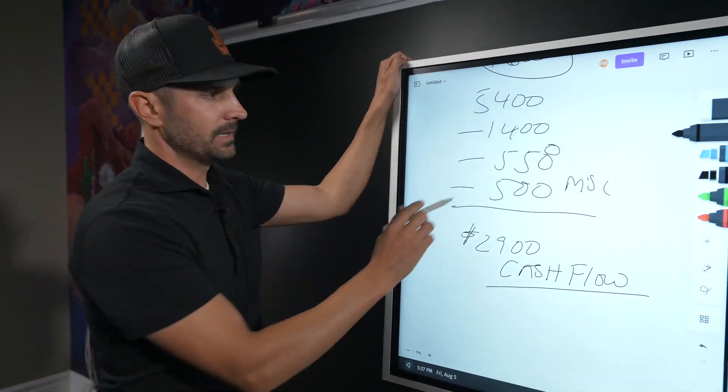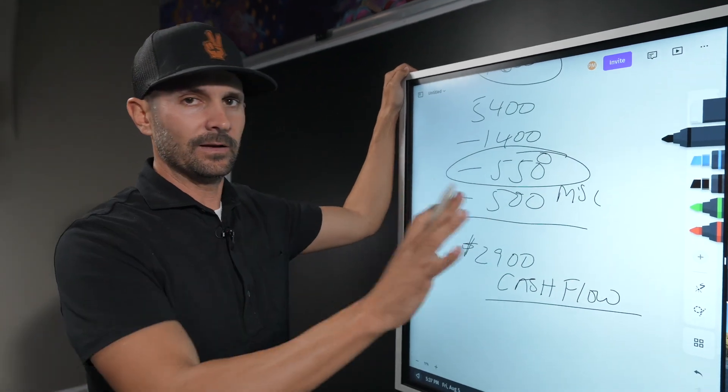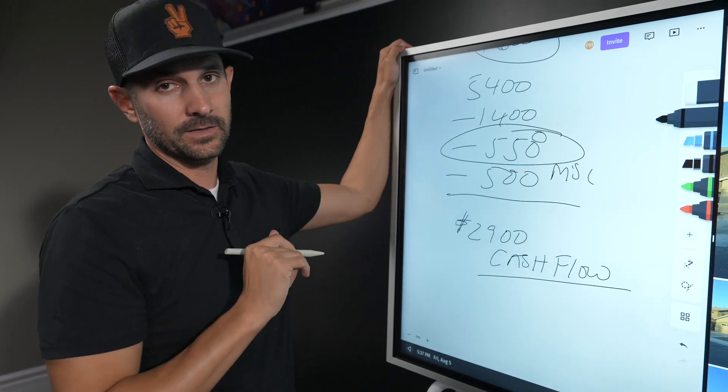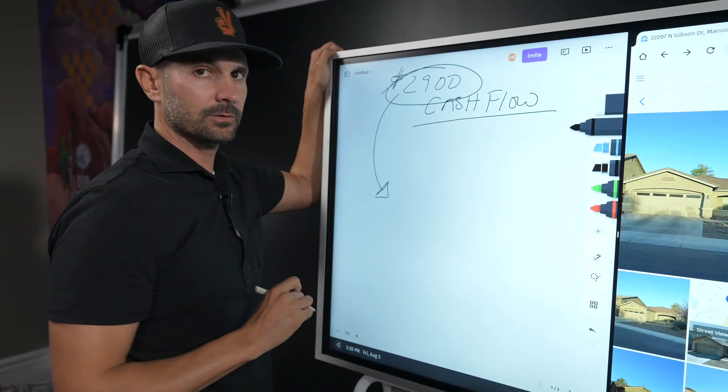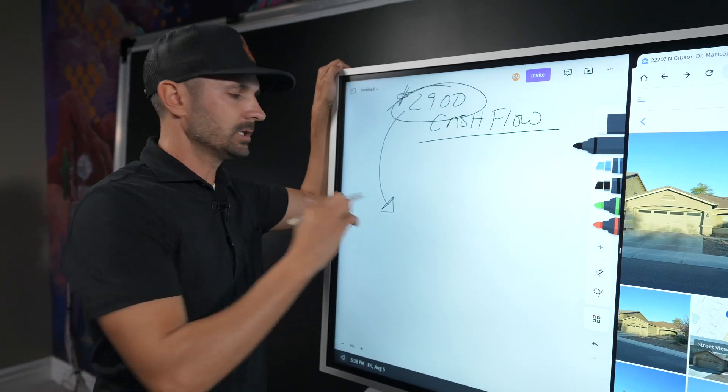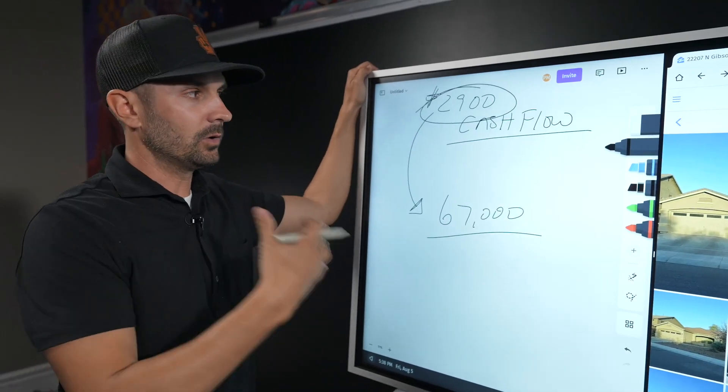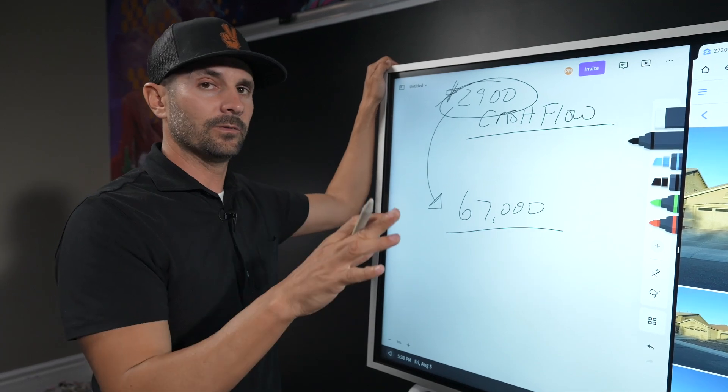Now we have something to write home about. We could make about $2,900 a month in cash flow. Now this is where it gets a little bit tricky. If I have $2,900 a month in net cash flow on this deal, how does my private money lender get paid back? Because my $550 is interest only. It's not paying down that $67,000. Well, what I do is I'll just pay that extra $2,900 every month towards my private money lender and chisel away that $67,000 until it's paid off.